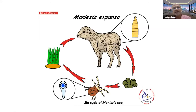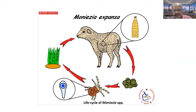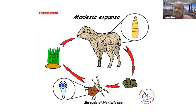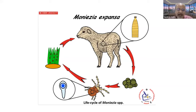Regarding Moniezia expansa, present in the small intestine, the gravid proglottids are voided in feces and appear like boiled rice particles. These proglottids disintegrate, releasing eggs consumed by oribatid mites. Oribatid mites are present in every type of soil — about 28 different species act as intermediate hosts for Moniezia and other tapeworms. Sheep and goat acquire infection by consuming these mites.